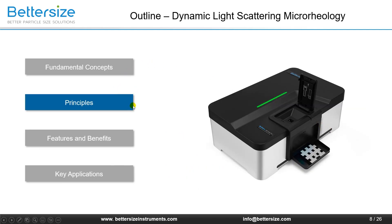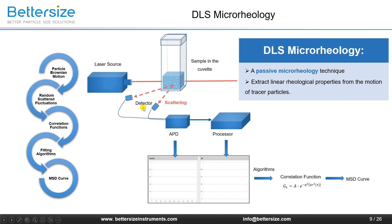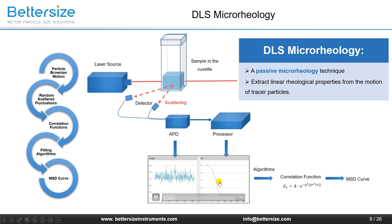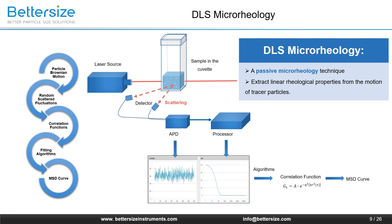Let's move on to the principles of DLS microrheology. DLS microrheology is a passive microrheology that applies no external forces to the tracer particles, and it can extract linear rheological properties from the motion of tracer particles undergoing thermal fluctuations in a system. In a DLS microrheology experiment, tracer particles undergo Brownian motion at thermodynamic equilibrium. The motion of the tracers causes random scattering fluctuations, and DLS microrheology measures the autocorrelation function of the light scattered by the particles. The relation between the MSD of the tracer particles and the autocorrelation function is then obtained from the correlation function.